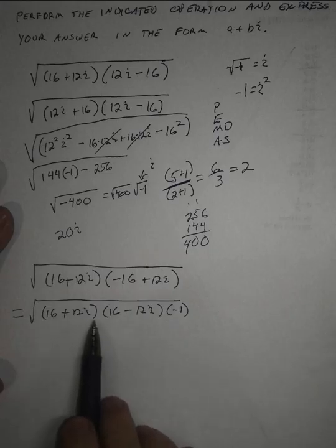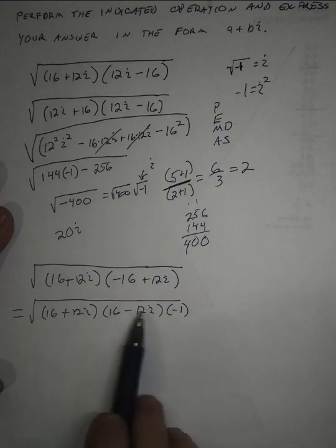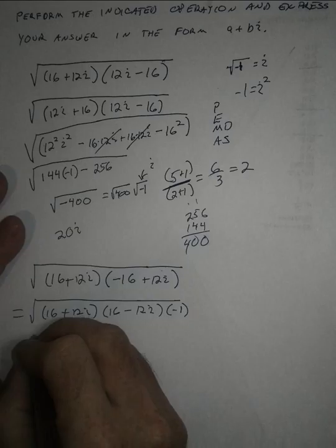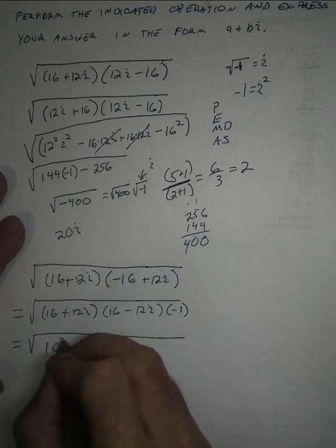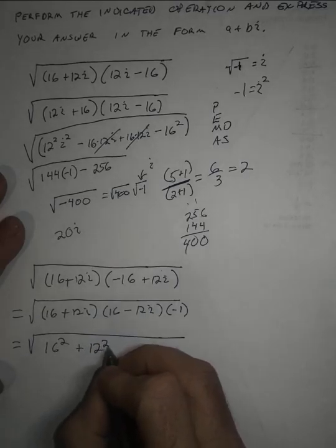And so we can use the shortcut for multiplying these out. Instead of being a difference of squares, because these are conjugates, they become a sum of the squares. And so we can go straight to, this is equal to 16 squared plus 12 squared.